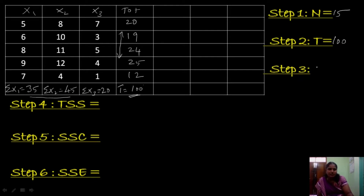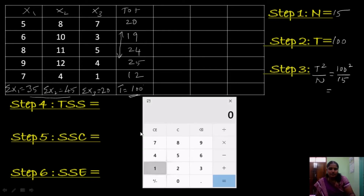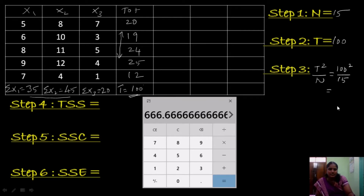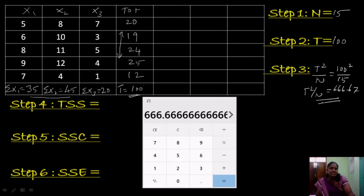The next step is we calculate the correction factor. Correction factor is nothing but T squared by n. T value is 100, so 100 squared over 15, where n value is 15. 100 squared is 10,000 over 15, we get 666.67. So we calculate the correction factor value T squared by n as 666.67.